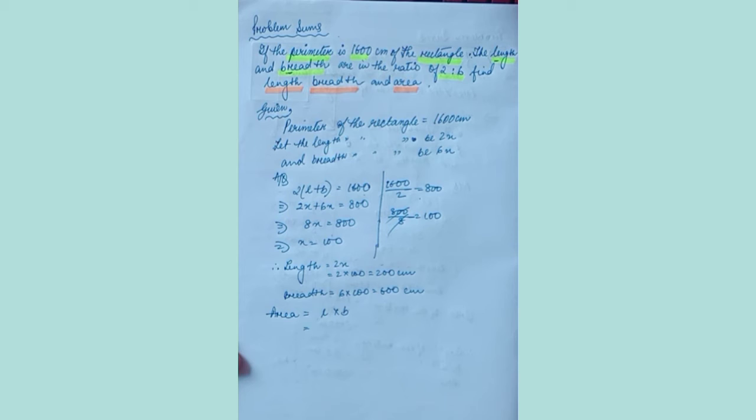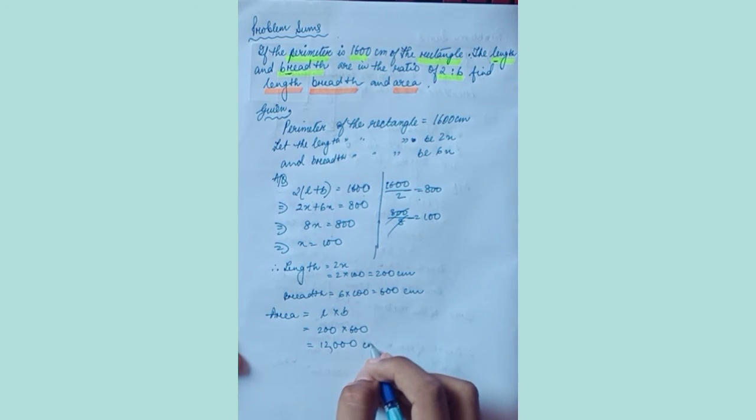Area of rectangle equals length into breadth, which will be equal to 200 into 600, which equals 12,000 centimeter square. At last, I have already said you that write the things which are told to be found.